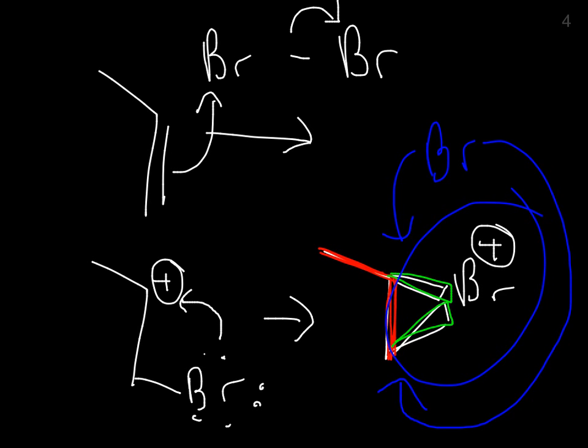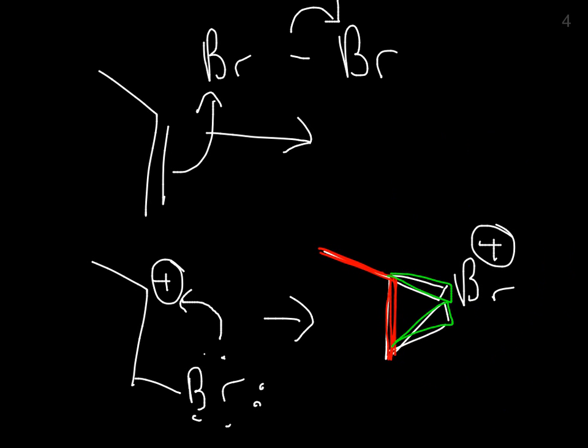It'll come in underneath the original bromine, and it'll kick off those electrons right there. So, let me get rid of some of the clutter. The second bromine will come in from underneath, and kick off those electrons, because this bromine right now, it's positive, it's electron deficient, it wants electrons. So, what happens is this.